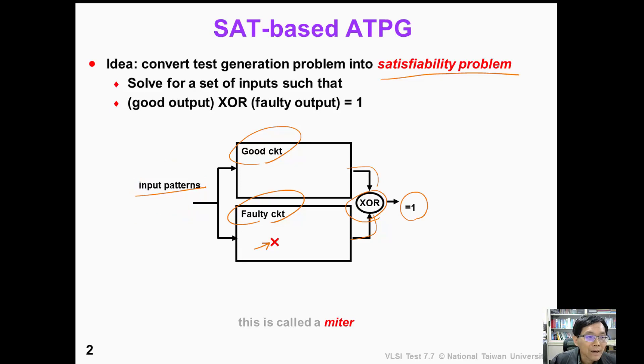If we can find an input such that the output is equal to one, then we successfully find a test pattern, because the good output and the faulty output are different. This structure is very useful, so we call this a miter.